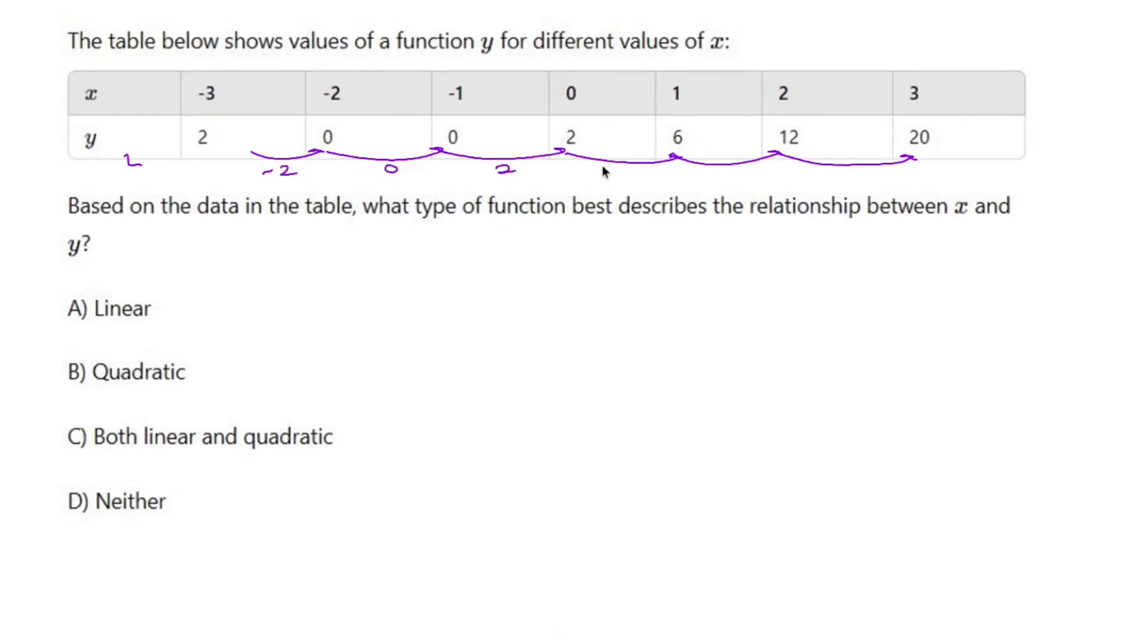0 to 2 is 2. 2 to 6 is 4. 6 to 12 is 6. 12 to 20 is 8. So this is not linear because the average rate of change is not constant.